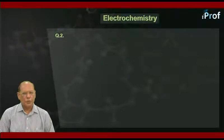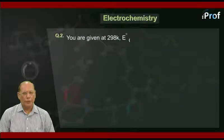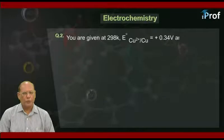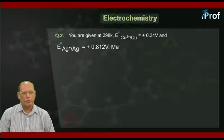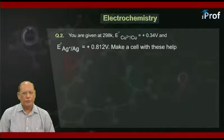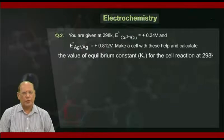The question is: You are given at 298K, E°Cu²⁺/Cu = +0.34V and E°Ag⁺/Ag = +0.812V. Make a cell with this help and calculate the value of equilibrium constant Kc for the cell reaction at 298 Kelvin.